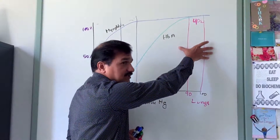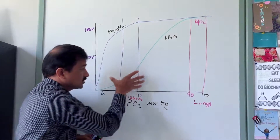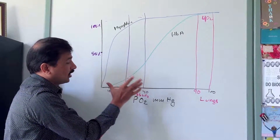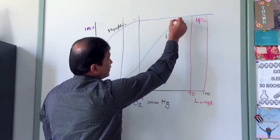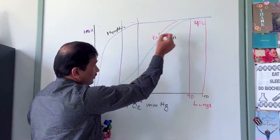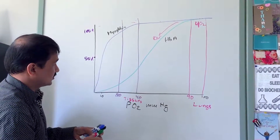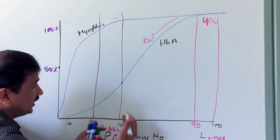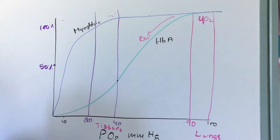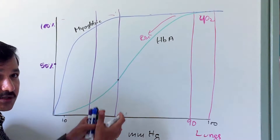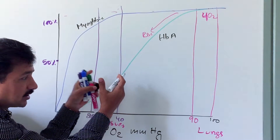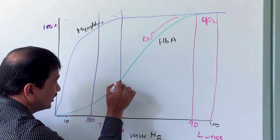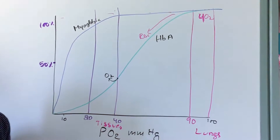When the RBCs move from pulmonary circulation into systemic circulation and reach the peripheral tissues, the partial pressure of oxygen drops to around 40 millimeters of Hg. This lower partial pressure causes hemoglobin to begin unloading oxygen — one subunit releases oxygen and undergoes a conformational change.